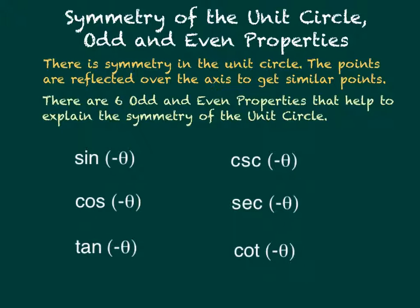Symmetry of the unit circle and odd and even properties. There is a certain symmetry in the unit circle where points end up being reflected over the x-axis and the y-axis to get similar points, with the exception that they would also have negative signs included. There are also six specific odd and even properties that help us explain the symmetry of the unit circle.